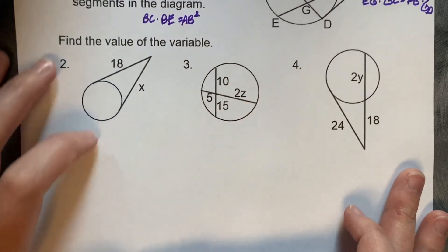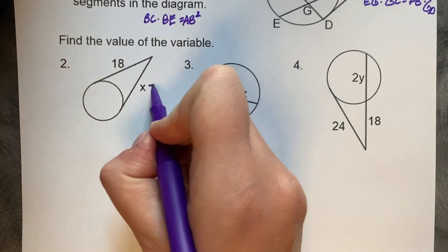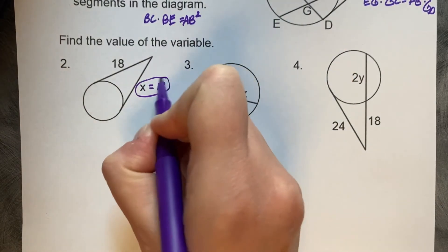Find the value of each variable. So 18 is a tangent, so X is also equal to 18.